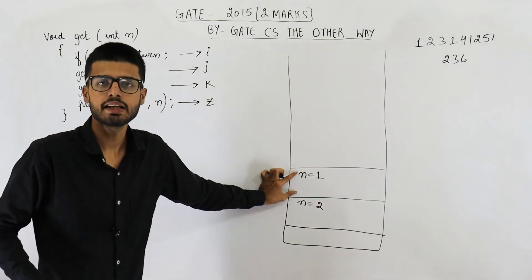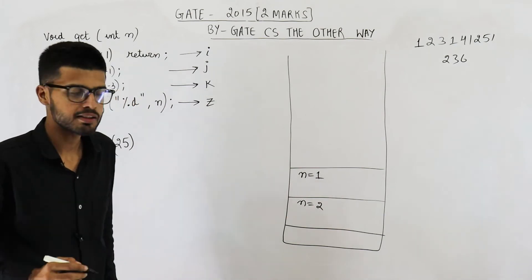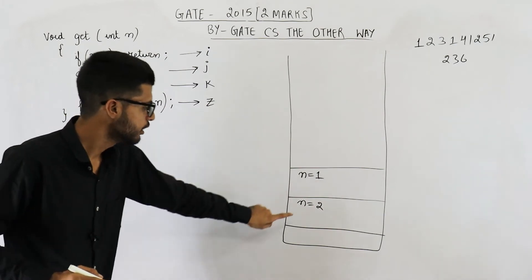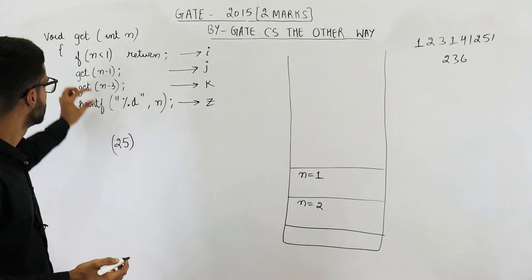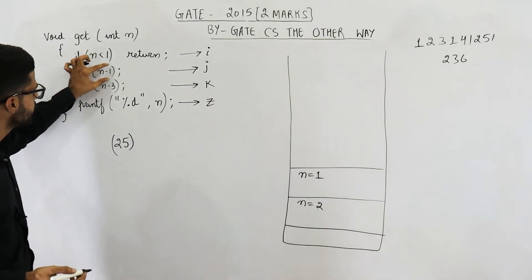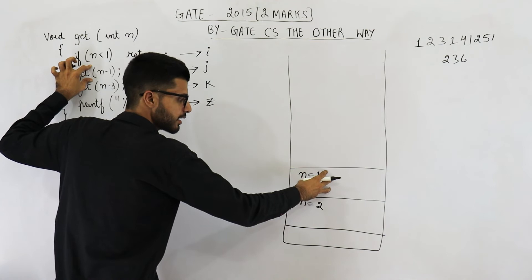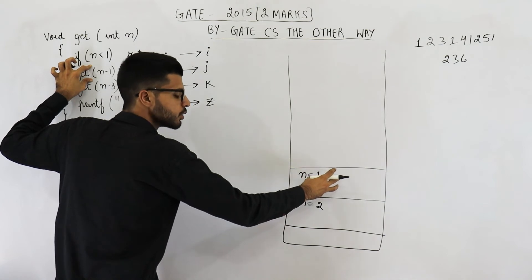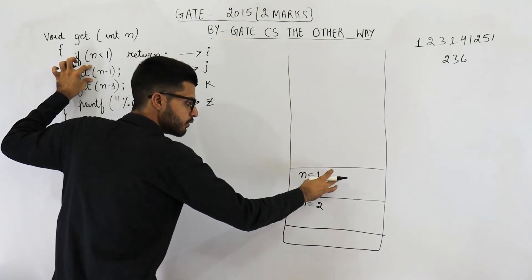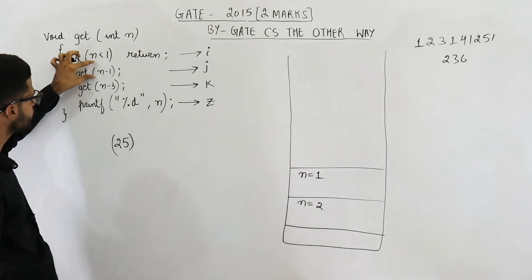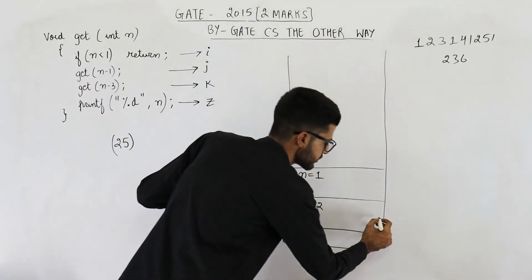When this function completely executes and returns, from where will you continue? You have made a function call, so this activation record has been pushed onto the stack. When this ends, you will continue from the next line — that means line k. So I'm writing line k as the return point.